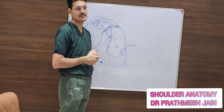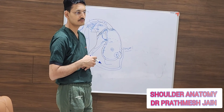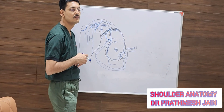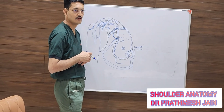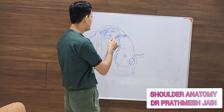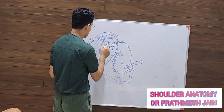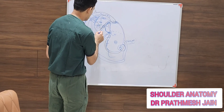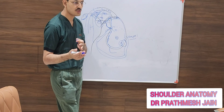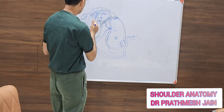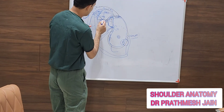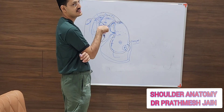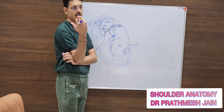On the posterior superior aspect of the humerus there is a bony defect called the Hill-Sachs lesion. The reverse Hill-Sachs lesion is a compression defect on the anterior superior aspect of the humerus — anterior to the subscapularis tendon — seen in posterior dislocations of the shoulder. For a reverse Hill-Sachs lesion, you perform a procedure called the McLaughlin procedure, in which you do an osteotomy of the lesser tuberosity and medialize it to cover the reverse Hill-Sachs lesion.